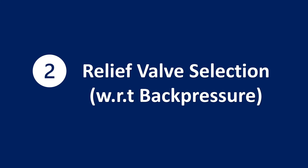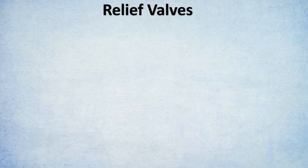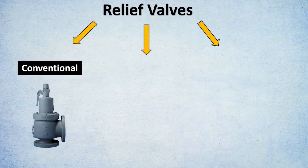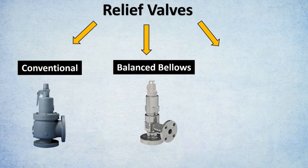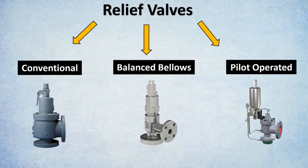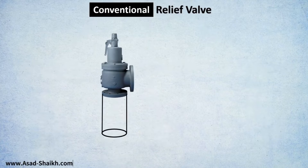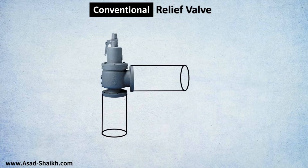The second most asked question is how to select a relief valve, especially using the thumb rule with respect to back pressure. Relief valves are generally divided into three categories: conventional relief valves, balanced bellows relief valves, and pilot operated relief valves. To understand selection of conventional relief valves, imagine a conventional relief valve with its inlet and outlet connected to the piping.